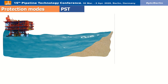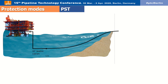The South Pars field process facilities are developed in 24 identical integrated phases, except for phase 1 where the produced gas is dehydrated in a glycol package. In all other phases, the reservoir production is routed with minimum offshore processing to shore via 32-inch multi-phase sea lines.